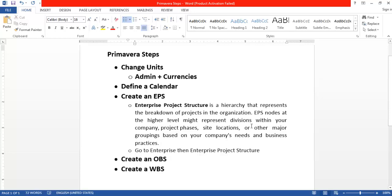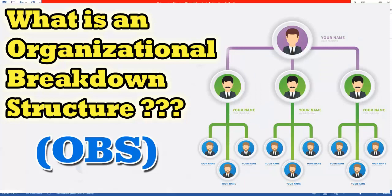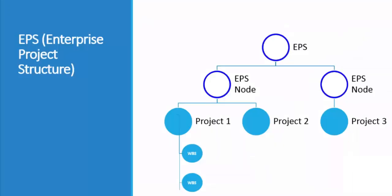If you want to see an enterprise project structure, you can easily Google it and look at the images — you will find plenty of examples. If you have seen my other Primavera tutorials on work breakdown structure and organizational breakdown structure, you should already have a quick idea of what an enterprise project structure is, because the hierarchy is the same in WBS and OBS.